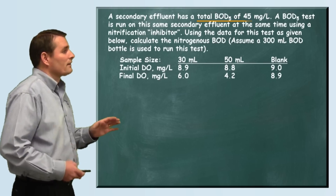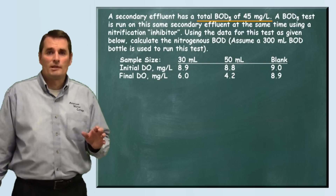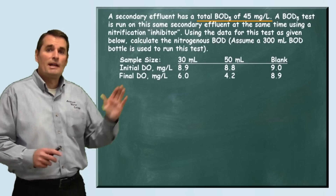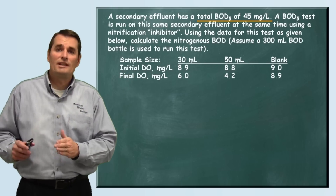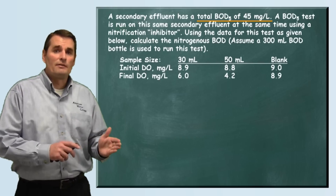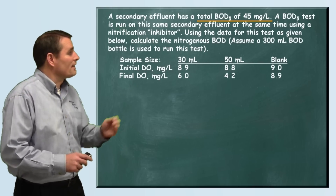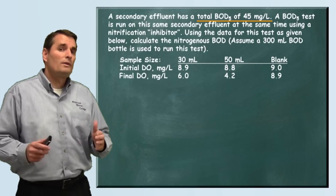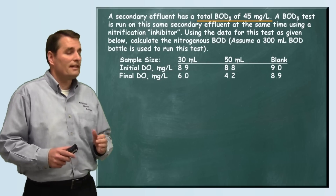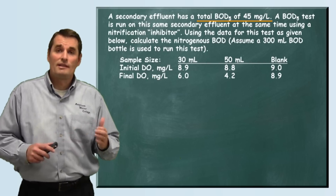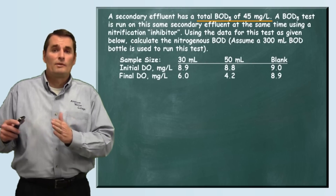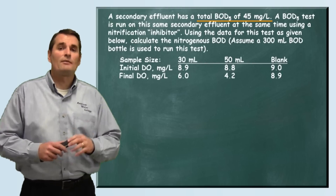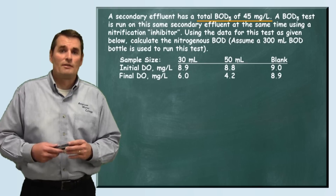They told us that our total BOD was 45 milligrams per liter. There are two types of BOD that make up the total BOD: carbonaceous BOD and nitrogenous BOD. When you add the nitrification inhibitor, you're determining the carbonaceous BOD. So what we will do is calculate the carbonaceous BOD using the data given, and then take the difference between our carbonaceous BOD and the total BOD — that'll be the nitrogenous BOD.